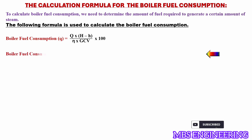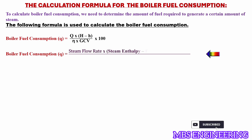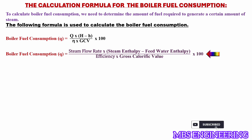Or, the boiler fuel consumption q is: the steam flow rate multiplied by (steam enthalpy minus feed water enthalpy), multiplied by 100, and then the obtained value is divided by the boiler efficiency multiplied by the fuel gross calorific value.